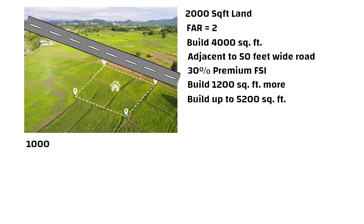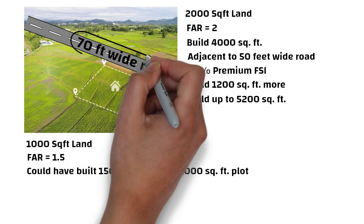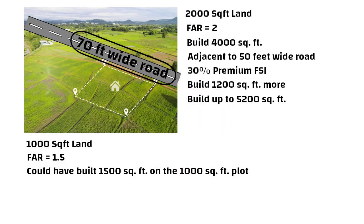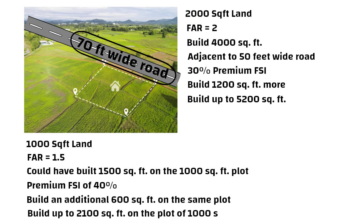Let us assume you have a 1000 square feet land along a 70 feet road and the FAR is 1.5. With this FAR of 1.5, you could have built 1500 square feet on the 1000 square feet plot. Since it is close to a road that is 70 feet wide, you are now eligible to avail a premium FSI of 40%. This means you can build an additional 600 square feet on the same plot. Hence, in this situation, you can build up to 2100 square feet on the plot of 1000 square feet.